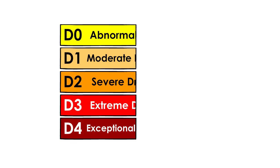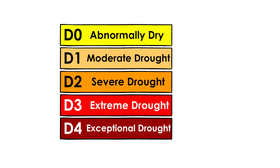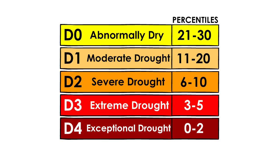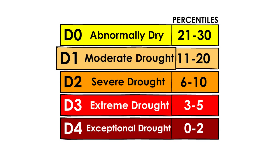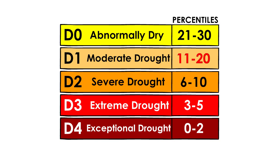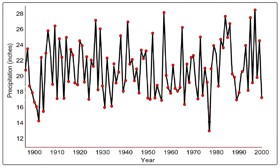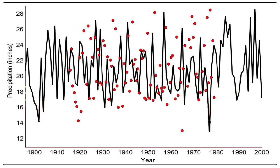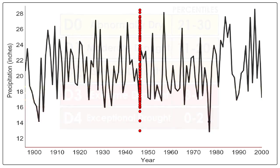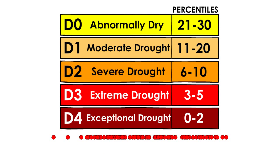Now that we have an overview of the categories, let's add some statistics to further our understanding. Each category has a percentile range associated with it. For example, D1 drought conditions fall in the 11th to 20th percentile. Looking at it another way, if we looked at 100 years of precipitation data and lined up the values in order from lowest to highest, we would need to see a value that falls somewhere between the 11th and 20th on the list in order for it to be considered D1.